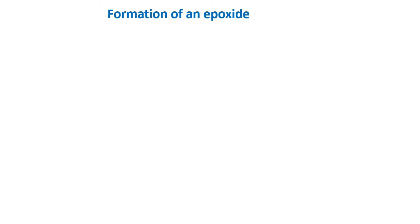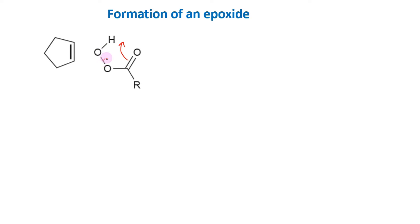A peroxyacid epoxidizes an alkene by a concerted electrophilic reaction, where several bonds are broken and several are formed at the same time. The carbon-oxygen pi bond breaks towards the electronegative oxygen to attach with the hydroxyl proton. The oxygen-oxygen bond breaks to form a new carbon-oxygen pi bond. The carbon-carbon pi bond breaks to form a new sigma bond with oxygen, which at the same time uses the hydroxyl electron pair to form a sigma bond with the other end of the alkene.